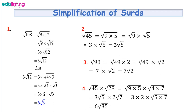The third example is root 98. Again, find two numbers that multiply to give 98, with one as a perfect square. We use root 49 times root 2. Root 49 is 7, and root 2 cannot be simplified, so we leave it as 7 root 2.